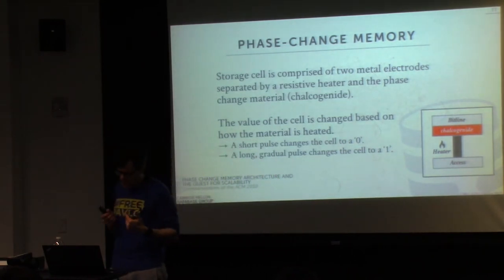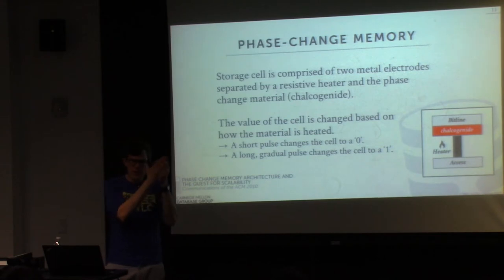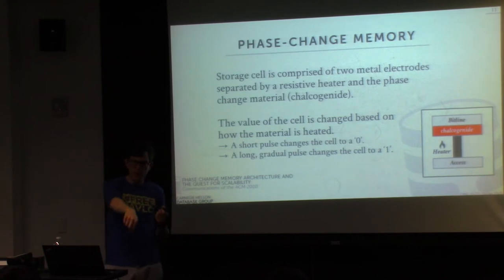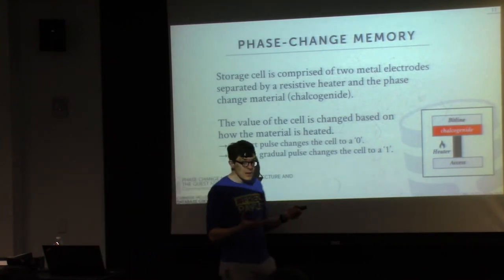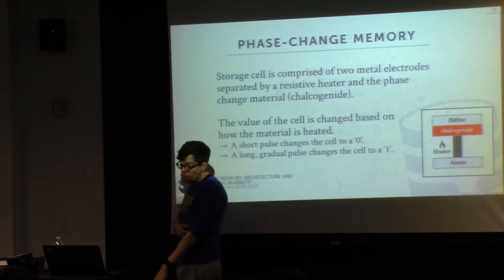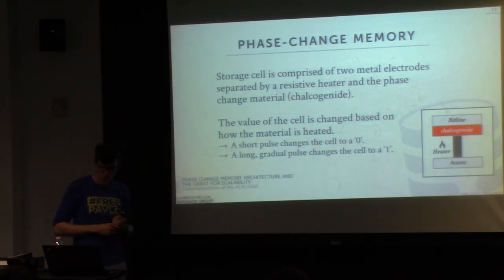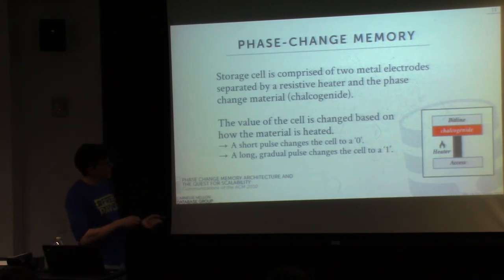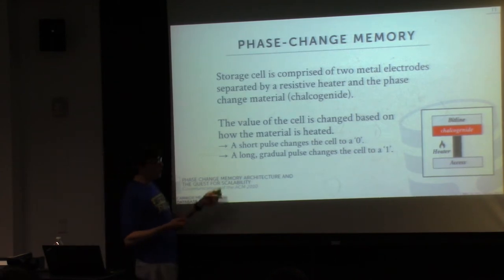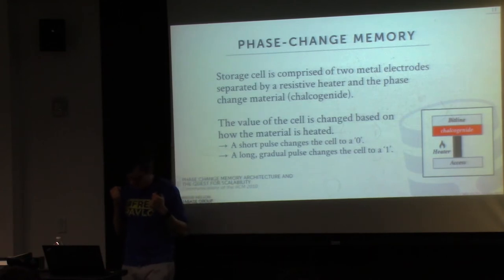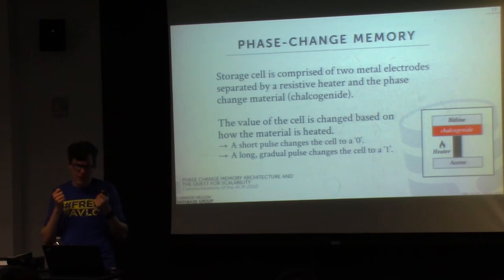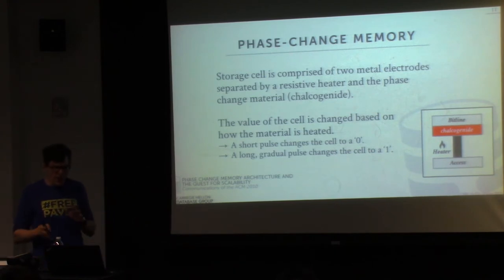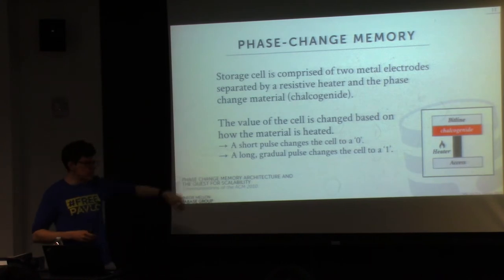Later designs of CPUs are talking about 3D stacking of memory on top of the CPU itself. If you're using something that generates heat, like DRAM or phase change memory, you won't be able to do that. IBM and Intel talked up phase change memory for a long time, but it doesn't seem like the first NVM devices coming out use this technology at all.